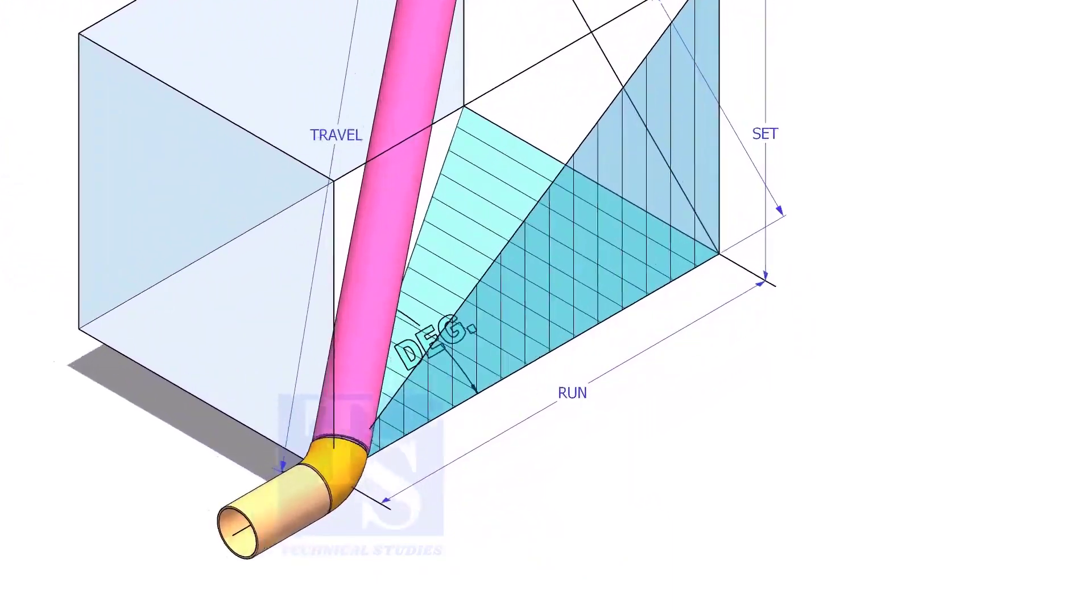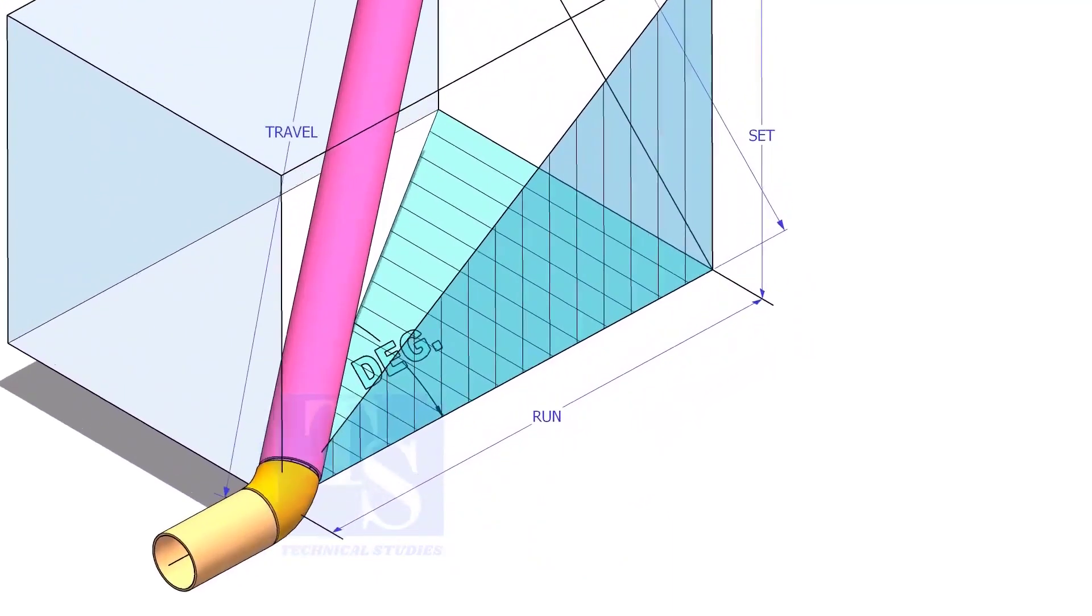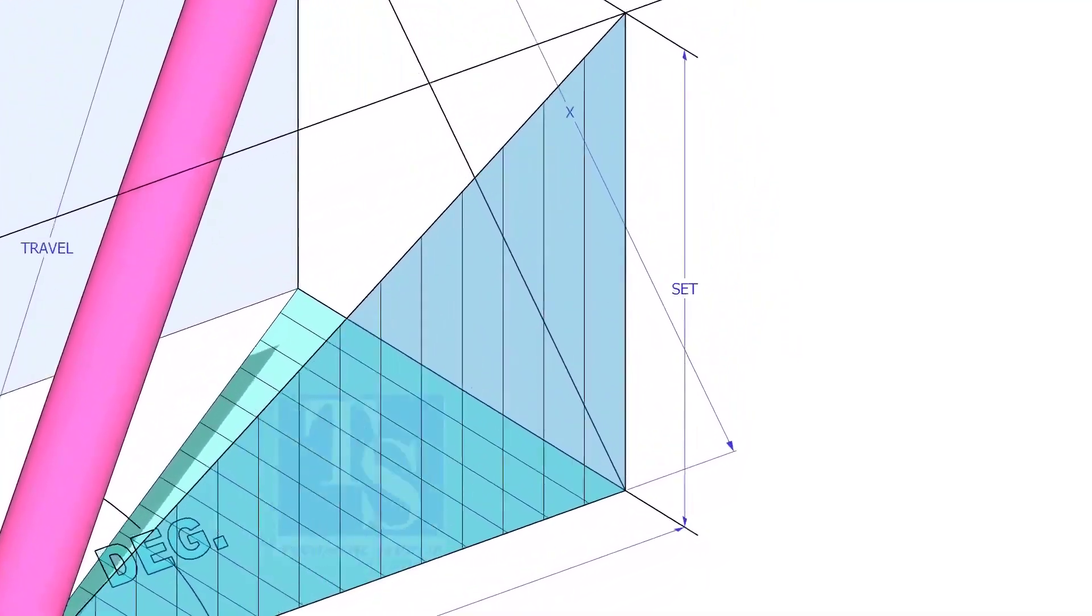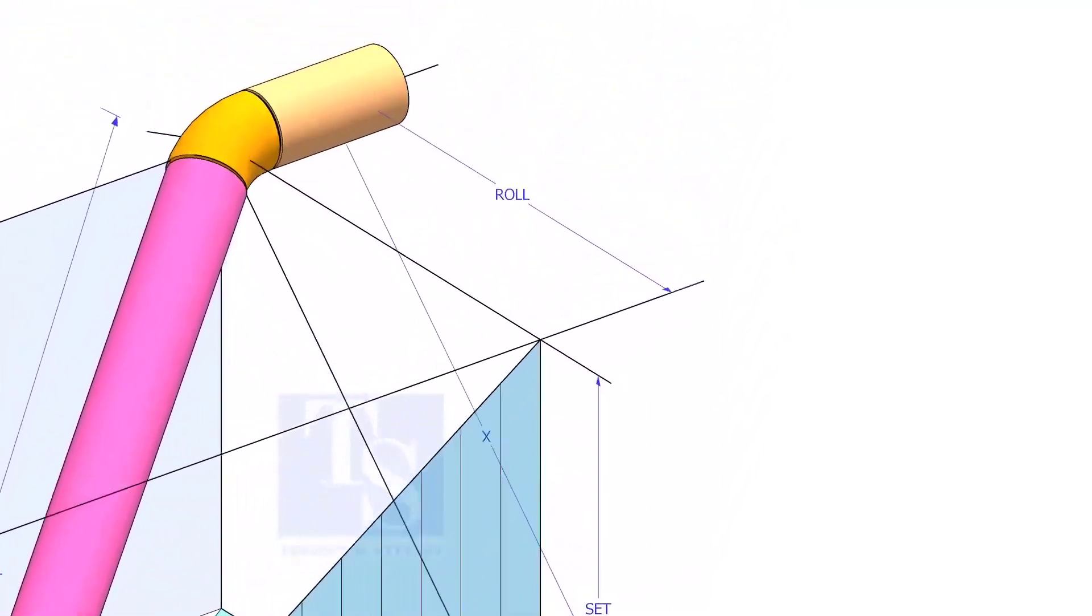In this video, I will show you how to calculate the travel length and the including angle of a double rolled offset pipe.